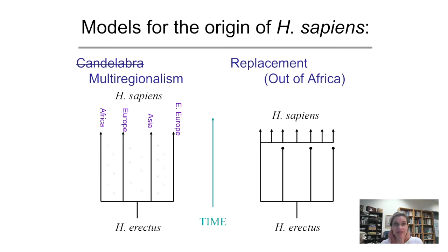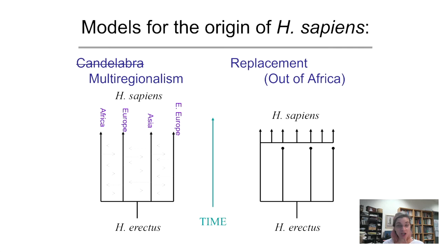The fossil and archaeological evidence led to the proposal of two major models — two hypotheses — that you've already seen before. But the fossil evidence isn't ideal for testing them because those are the data used to derive the models, so you need something independent to test them. Also, you can't read very specific ancestry from bones. This is where genetic sequence data used in population genetics comes in — that was the ideal independent dataset to test these two hypotheses.